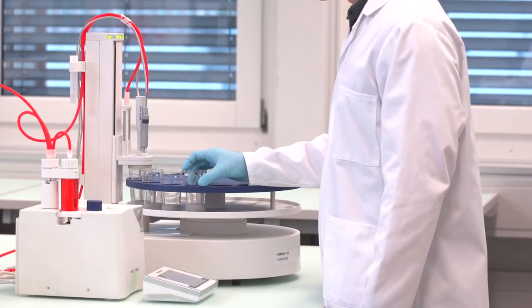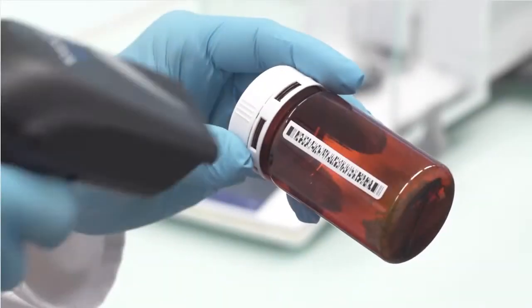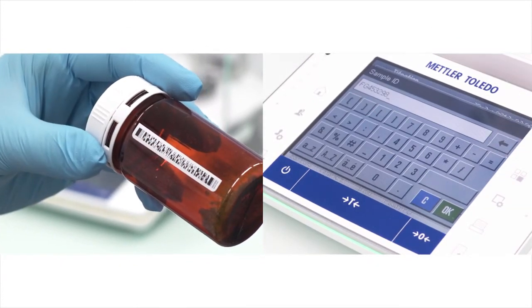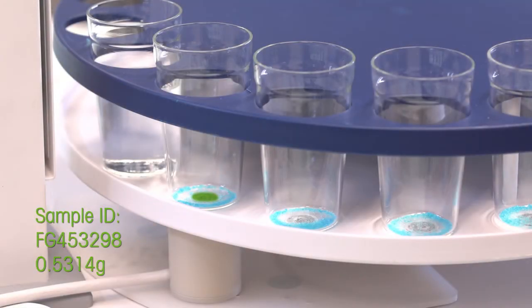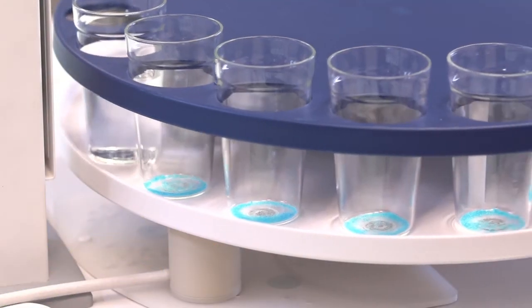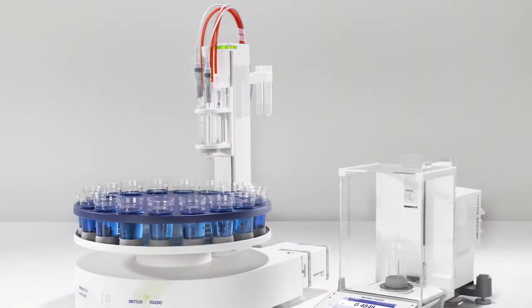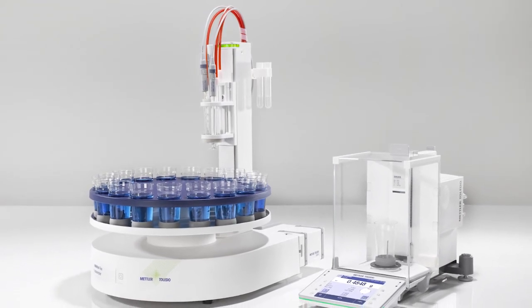Attach a barcode reader to the balance for more secure and efficient identification entry. Use smart sample for more secure weighing and efficient titrations. Smart sample is flexible for your samples and tailored to match your workflow.